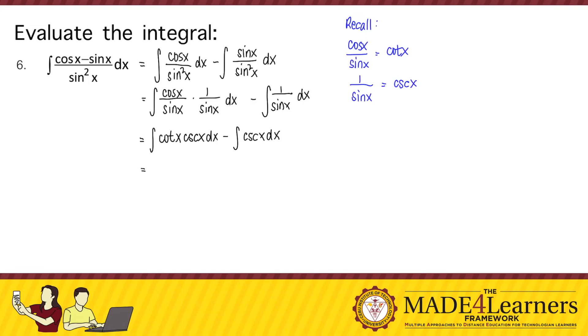And so we have integration formulas for this. The integral of cotangent x cosecant x dx is negative cosecant x, and then the integral of cosecant x dx is the ln of cosecant x minus cotangent x, and then plus c.